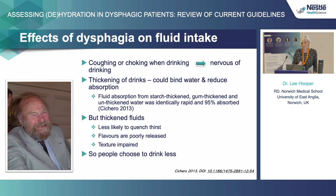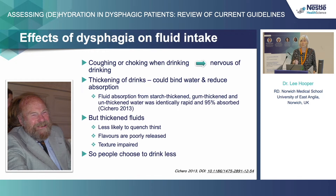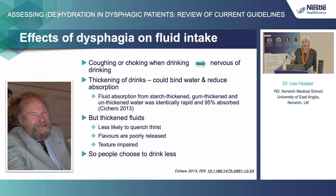So what's the effect of dysphagia? Well, we all know that coughing or choking when drinking can make people nervous about drinking — that's one of the first mechanisms. There has been a theory that thickening of drinks can bind water and reduce absorption of fluid, but actually there's been some good research by Citro and colleagues suggesting that's not the case — thickened liquids hydrate you just as well as any other liquids. But thickened fluids are less likely to quench our thirst, they release flavors poorly, and they may have impaired texture, so people may be less interested in drinking because of the thickening.